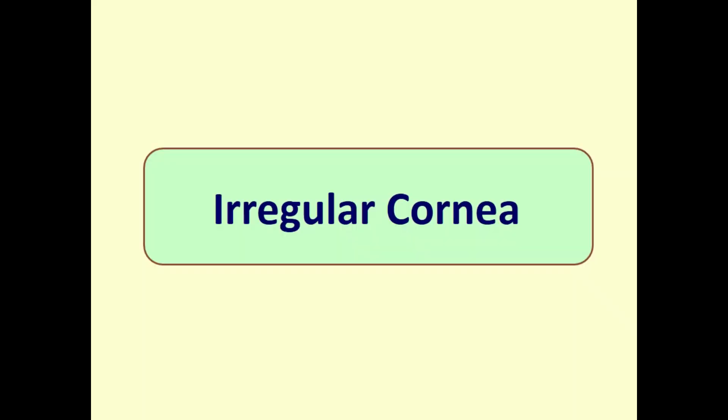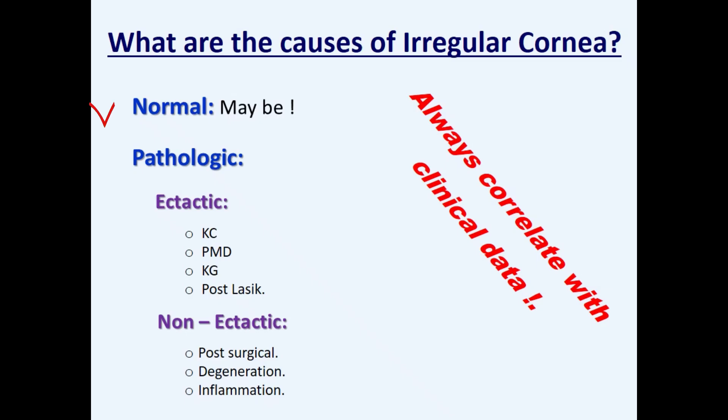Irregular corneas. Topographically irregular corneal surface is not necessarily abnormal. Some normal corneas may appear irregular. Also, pathologically irregular corneas are not necessarily ectatic. Non-ectatic causes of irregular corneal surface include corneal degenerations, inflammation, dystrophies, and post-surgical.